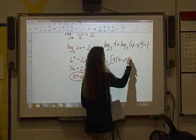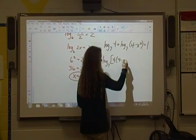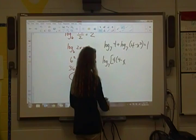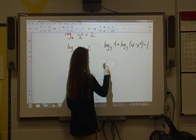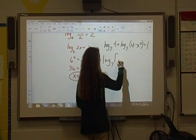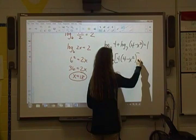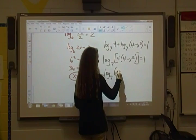So I'll have log base 7 of 4 times 4 minus x squared. Wow. Smart board. It doesn't like me right now. Log base 7 of 4 times 4 minus x squared. I'll multiply that through. Log base 7 of 16 minus 4x squared.